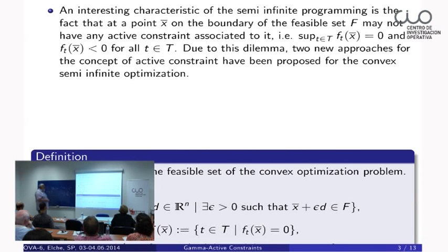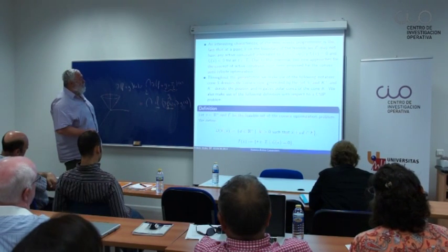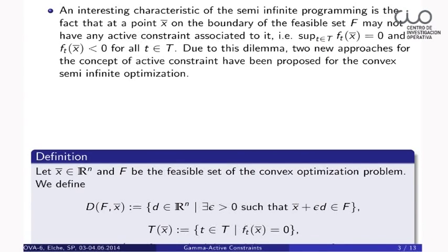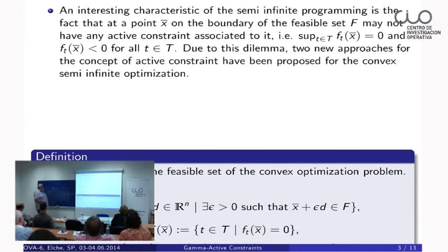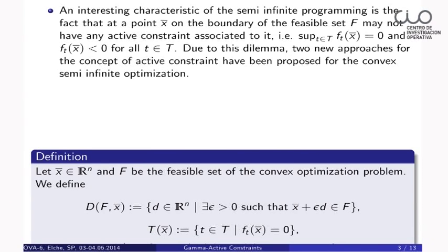Here are some notations. We will use the convex cone generated by the set S, as well as K-plus and K-minus, the positive and negative polar cones of the cone K. We will make use of the well-known definition of the cone of feasible directions and the set of active indices. Both of these are local definitions given at the point x-bar.